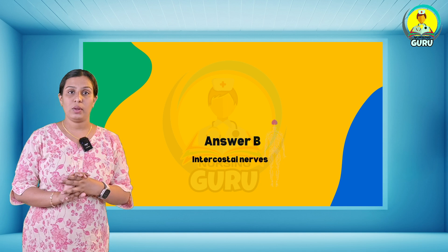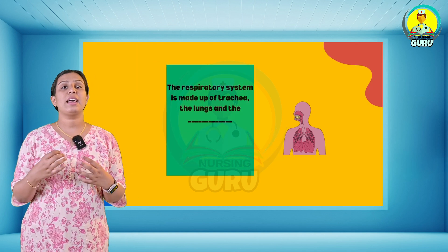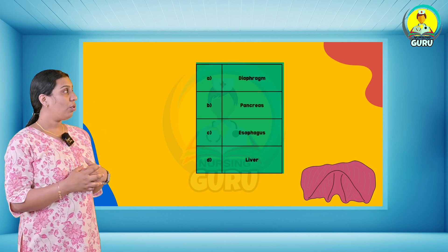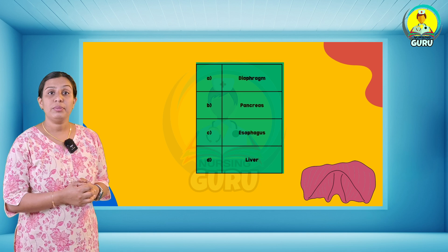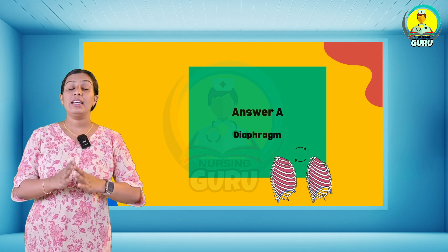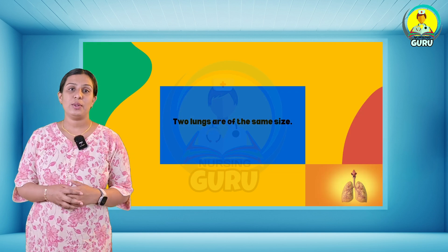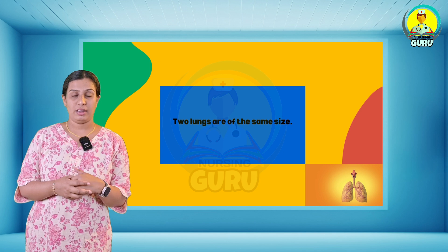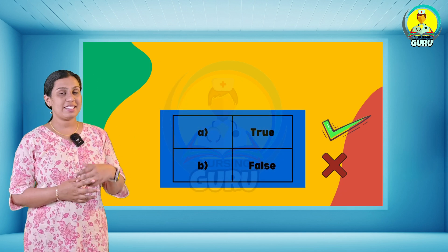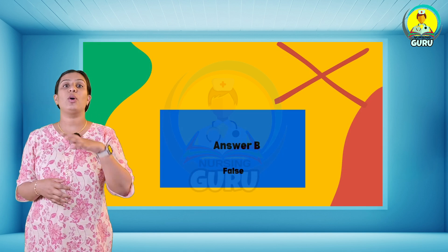Twelfth question: the respiratory system is made up of the trachea, the lungs, and what else? Options are diaphragm, pancreas, esophagus, and liver. The answer is diaphragm — option A. Thirteenth question — true or false: the two lungs are the same size. The answer is false — option B.